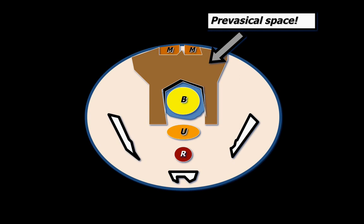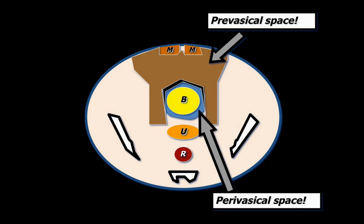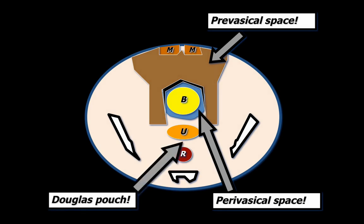The brown space anteriorly is called the pre-vesicle space. The blue space surrounding the urinary bladder is called the peri-vesicle space, and the very famous space between the uterus and rectum is known as the Douglas pouch or the recto-uterine pouch.